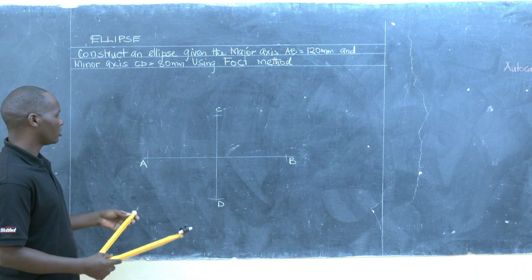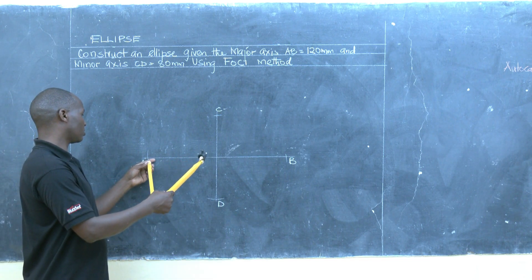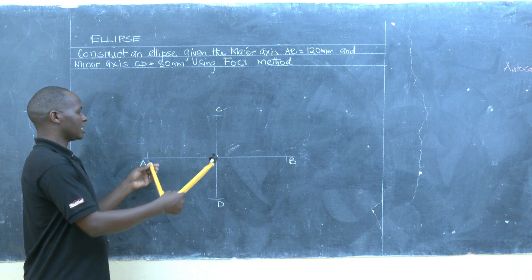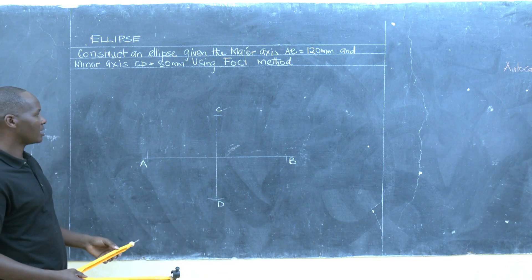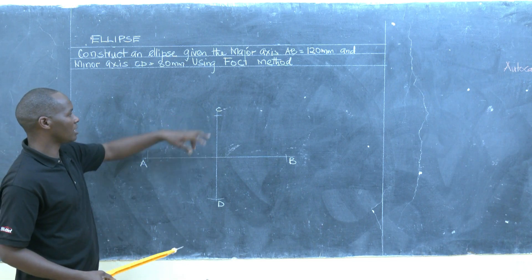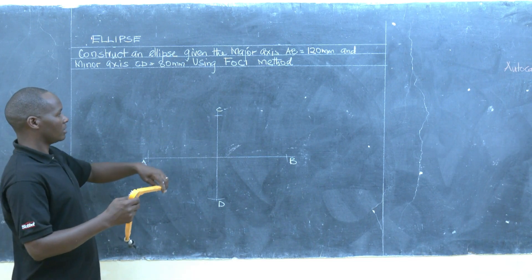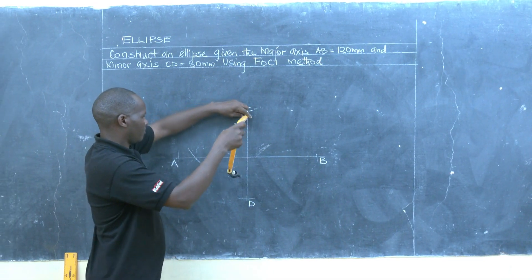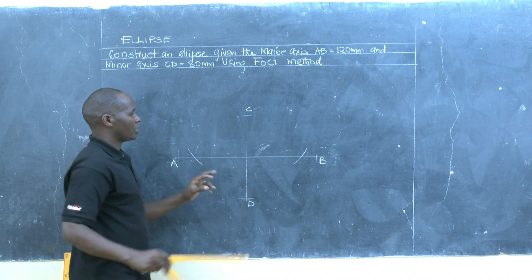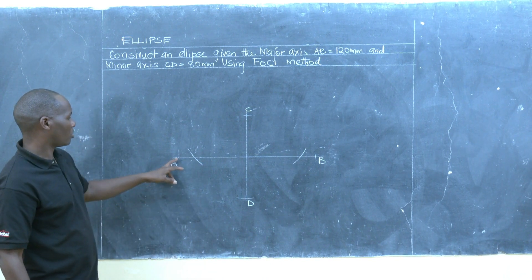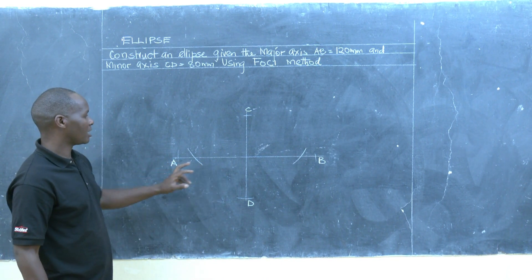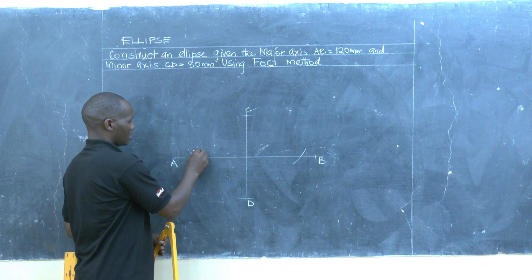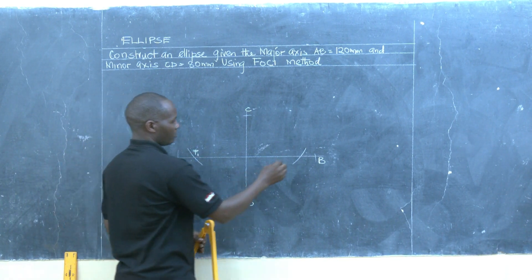Our major diameter is AB, so we open our compass to that radius. Then, using point C as our center, we describe an arc on the major diameter to denote F1 and F2.